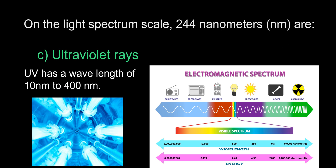The answer is C, Ultraviolet rays. Ultraviolet light has a wavelength between 10 to 400 nanometers. This might seem like a weird question on a wastewater exam, but UV disinfection systems are becoming increasingly more common in our industry. UV light also has laboratory applications in both bacteriology and spectroscopy.